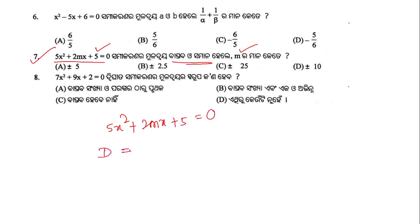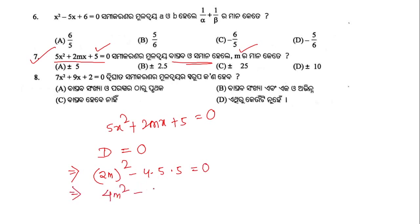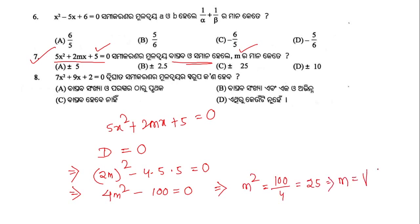To find the value of m, we set the discriminant D = 0: b² - 4ac = 0, that is 2m² - 4·5·5 = 0. Continuing: 4m² - 100 = 0, which implies m² = 100/4 = 25, that is m = ±5. Option A is the right answer.